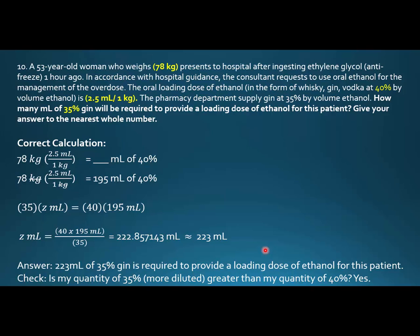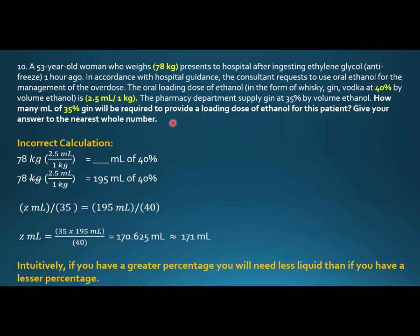So let's see it the incorrect way. I'm not going to reread this, nothing's changed there. What's changed is that I thought that the z mLs goes with 195 mLs in the numerator, and we're going to match those in the proportion, and 35 goes with the 40. So when I do my factoring, I get 35 times 195 over 40 equals 170.625 mLs, or 171 mLs.